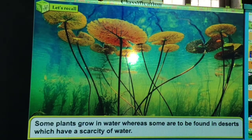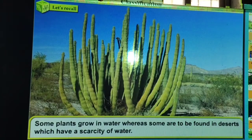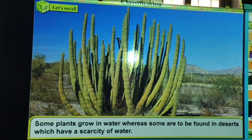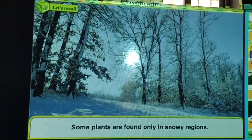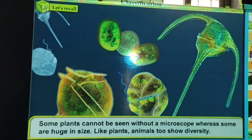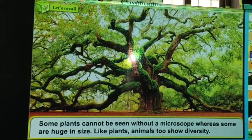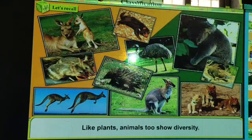Some plants are found in deserts which have a scarcity of water — dry areas with very little water. Some plants are found only in snowy regions. Some plants cannot be seen without a microscope, whereas some are huge in size. Animals too show diversity.